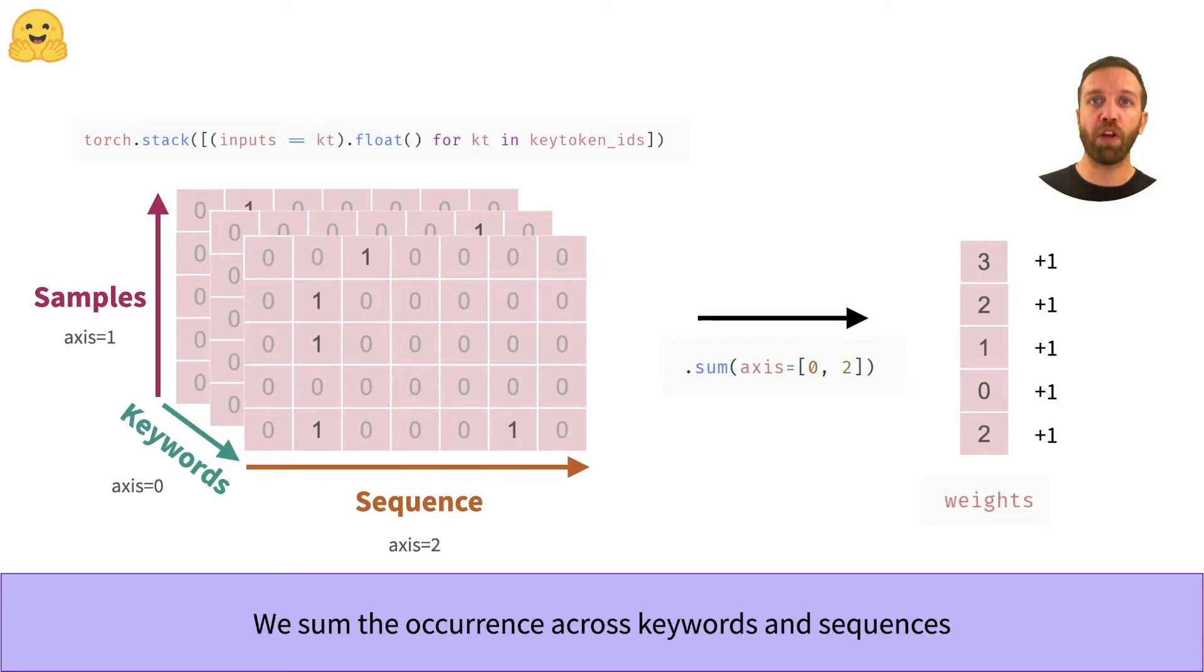For the weights, we use Boolean logic to get a tensor with ones where a keyword occurred and zeros where not. This tensor has an additional dimension as the loss tensor we just saw because we get the information for each keyword in a separate matrix. We only want to know how many times keywords occurred per sample, so we can sum over all keywords and all positions per sample.